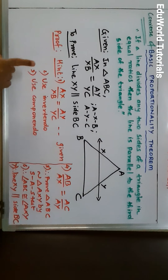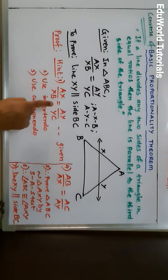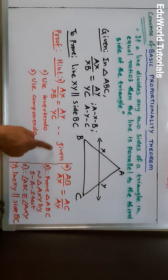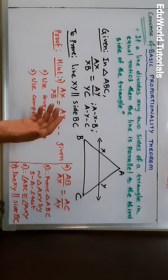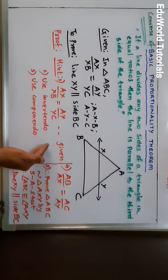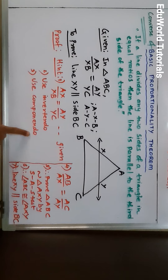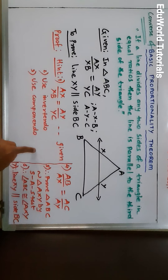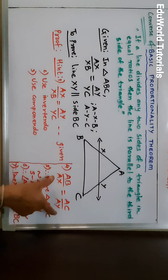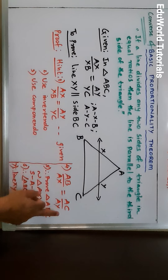I have given you the hint for the proof. We are given AX upon XB is equal to AY upon YC. Now use invertendo: XB upon AX is equal to YC upon AY. After that, use componendo: XB plus AX upon AX is equal to YC plus AY upon AY. This gives AB upon AX is equal to AC upon AY.